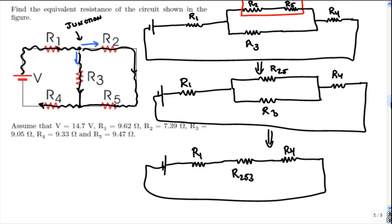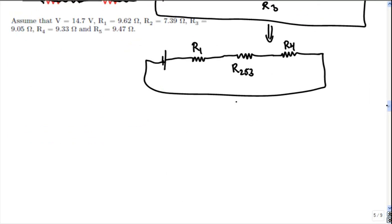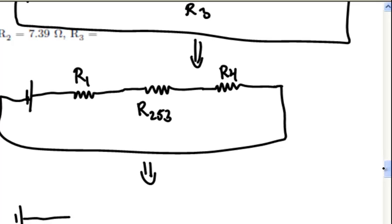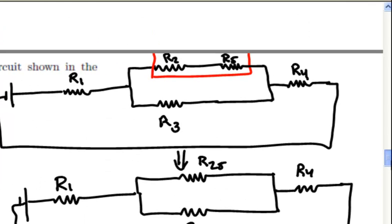So now we have just three resistors in series. The final simplification step is one REQ. We can close that off, and it's just going to be all three together.